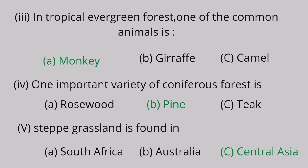Question 5: Steppe grassland is found in A. South Africa, B. Australia, C. Central Asia. Central Asia is the correct answer.